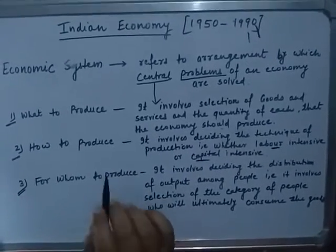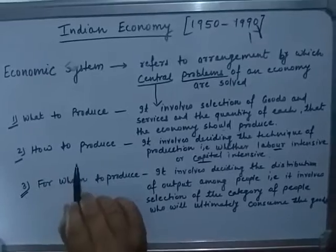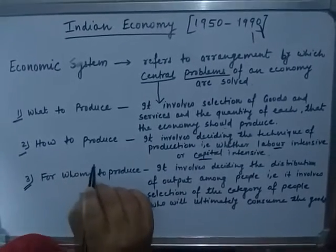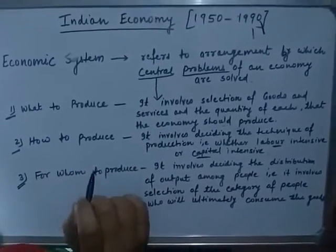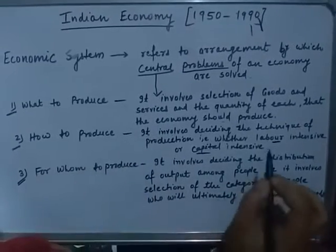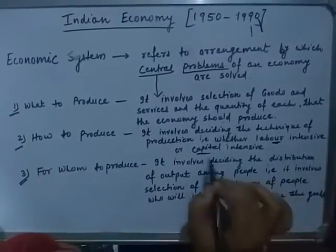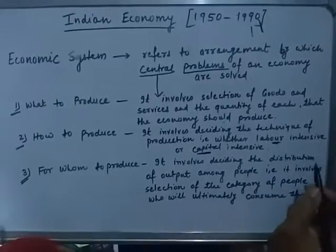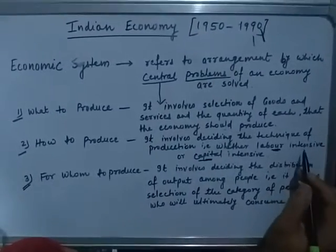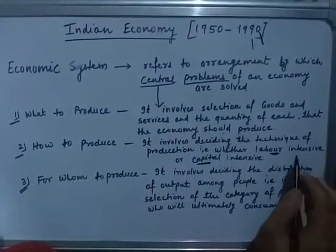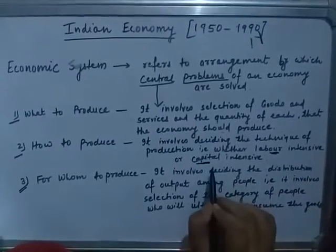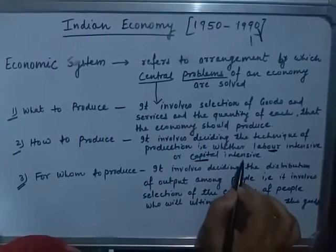The second problem is how to produce. How to produce means deciding the technique of production — whether labor intensive or capital intensive. Labor intensive means more labor and less capital, while capital intensive means more capital and less labor.